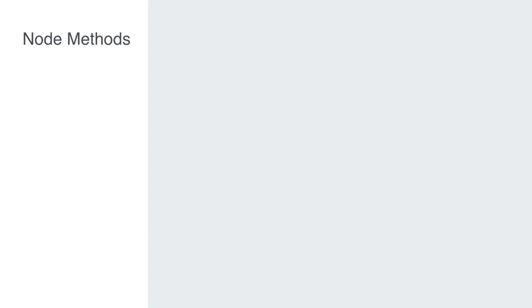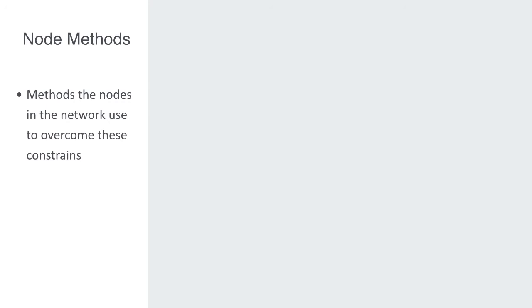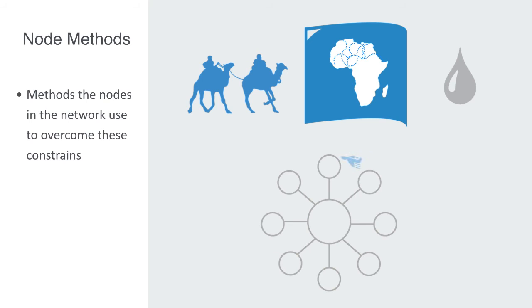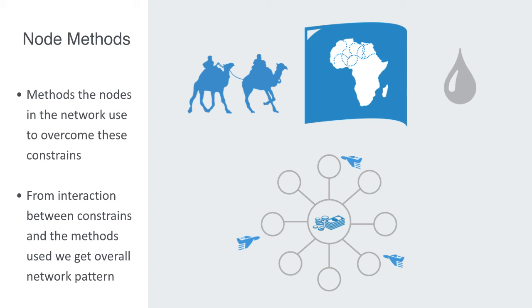Inversely, we could look at this the other way around, asking what methods the nodes in the network used to overcome these constraints. Our travelers in the Sahara were using prior knowledge encoded in maps as to where the water wells were, in order to overcome the arid environmental conditions. A national airline, because of the limitations on finance, may not be able to run a direct route between every city within a country, but will get around this by creating a hub and spoke network so as to reach all locations. Out of the interaction between these environmental constraints and the methods used by nodes to overcome them, we get a particular overall structure to the network, making real-world networks distinctly different from our random network model.